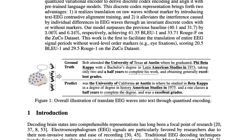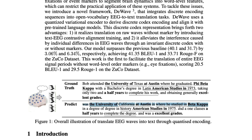With that disclaimer — if you look at the EEG waves with a ground truth and a predicted truth: for example, the ground truth says 'Bob attended the University of Texas Austin where he graduated Phi Beta Kappa with a bachelor's degree in Latin American studies in 1973, taking only two and a half years to complete his work and obtain generally excellent grades.' The predicted output was 'the University of California at Austin, in where he studied in Beta Kappa, in a degree in history American studies in 1975, one and a half years to complete, and was excellent grades.'